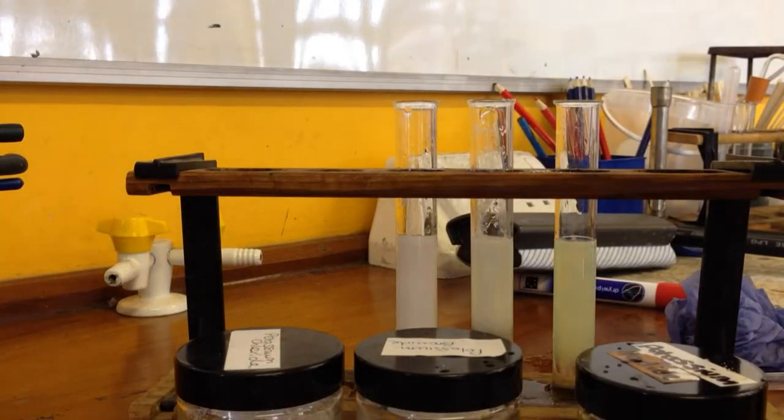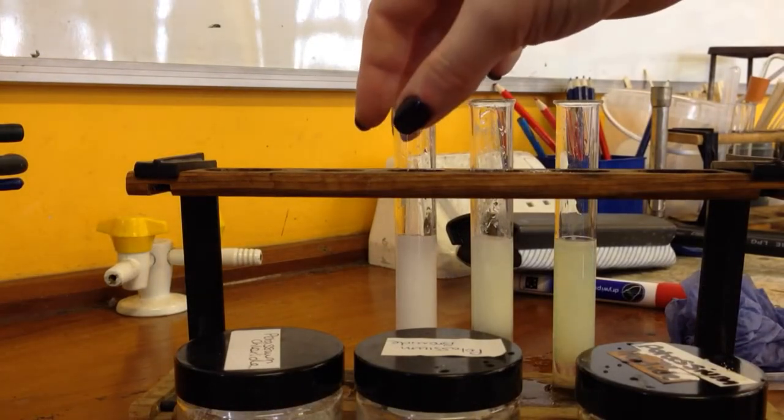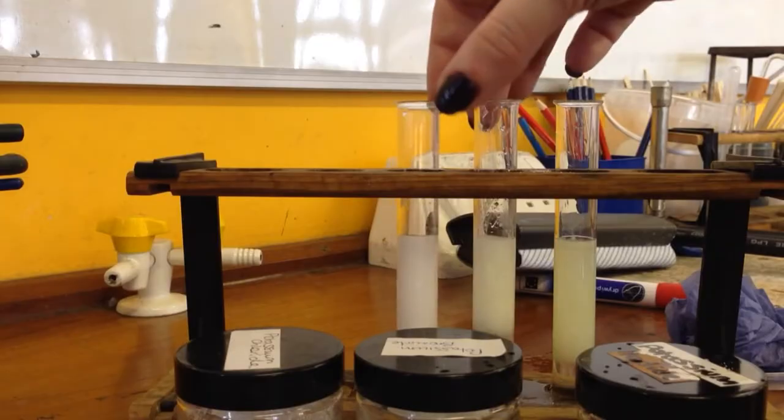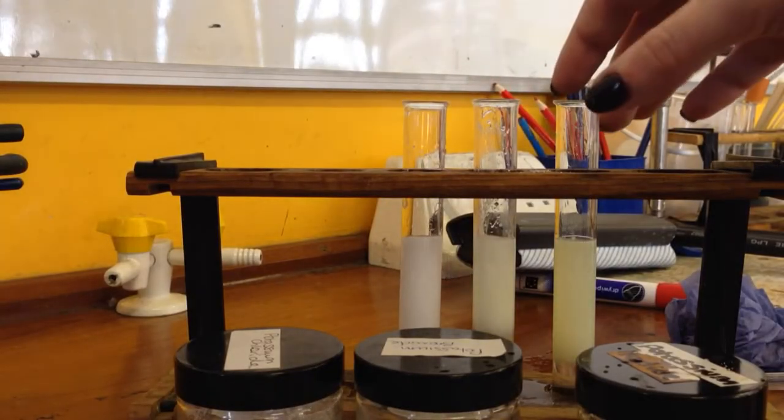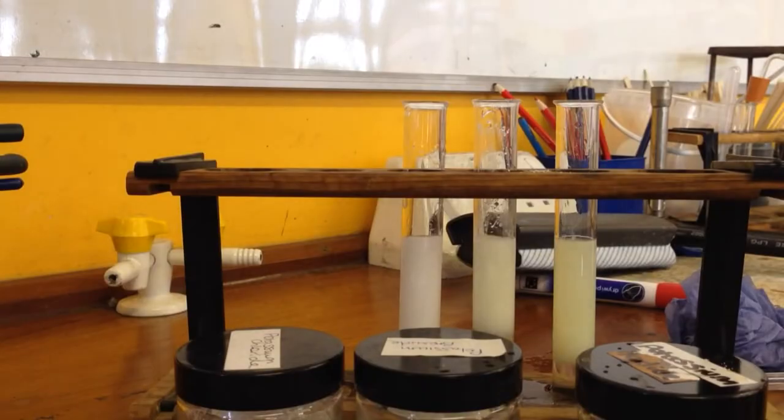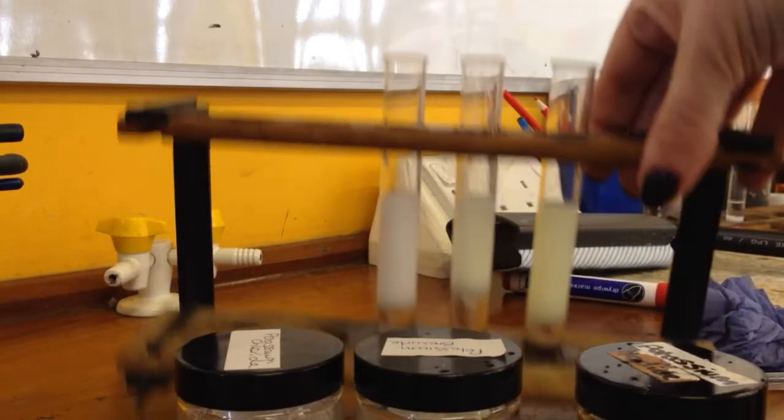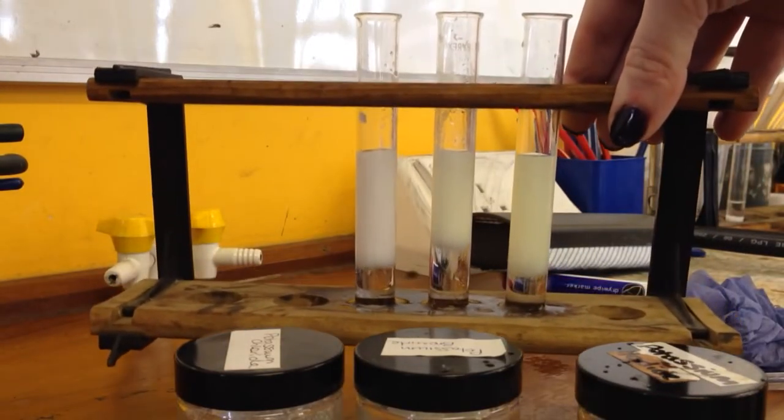We can see they're all forming quite different colors. The chloride solution goes white, the bromide solution goes cream and then the iodide solution goes yellow. So those are the three tests for the halides.